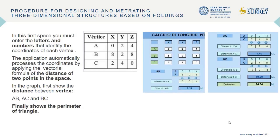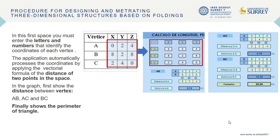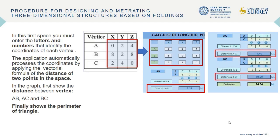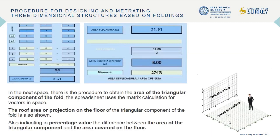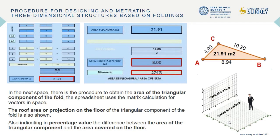In this first space you must enter the letters and numbers that identify the coordinates of each vertex. The application automatically processes the coordinates by applying the vectorial formula of the distance of two points in space. The graph first shows the distance between vertices AB, AC, and BC, and finally shows the perimeter of the triangle. In the next space, there is the procedure to obtain the area of the triangular component of the fold; the spreadsheet uses matrix calculation for vectors in space. The roof area or projection on the floor of the triangular component is also shown, indicating in percentage value the difference between the area of the triangular component and the area covered on the floor.